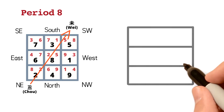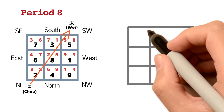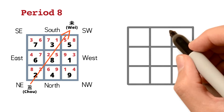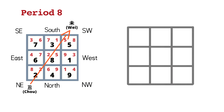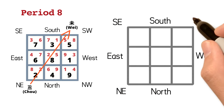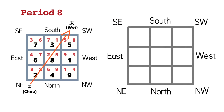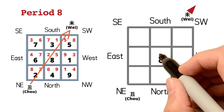Let's first draw a nice square grid chart. Now, clearly label the directions of the chart. The sitting direction is Chou, and the facing direction is Wei. In Period 8, number 8 star is in the middle.